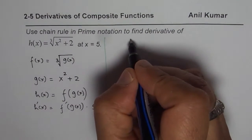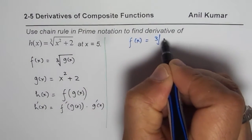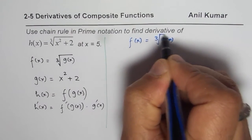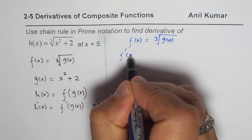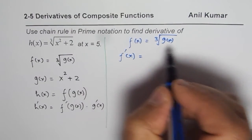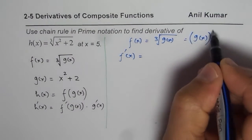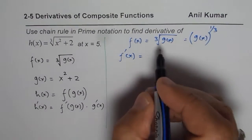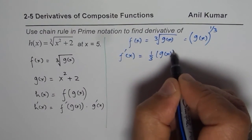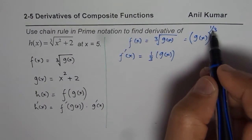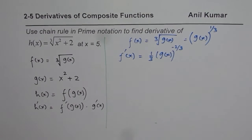We have f(x) equals the cube root of g(x). The derivative f'(x) — writing this as g(x) to the power of 1/3 and applying the power rule — gives us 1/3 times g(x) to the power of 1/3 minus 1, which is minus 2/3. So that is f'(x).